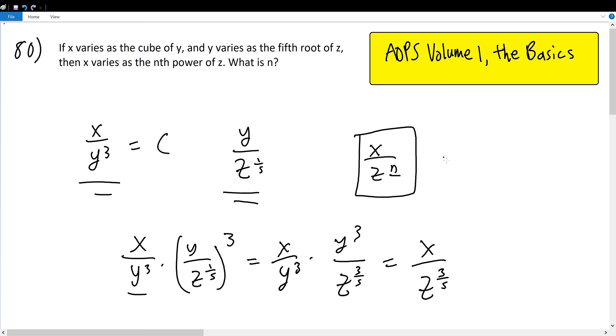And we see here that x over z to the n power, which is the form that we're supposed to find it in, correlates with x over z raised to the three-fifths power. And if these two expressions are congruent, that must mean, since the two bases are alike, n must be equal to three-fifths, the solution to our question.